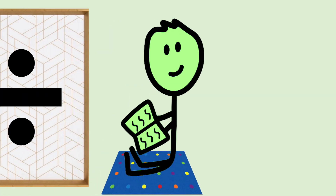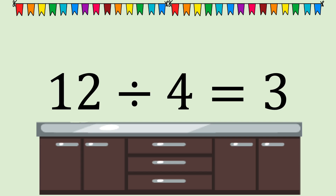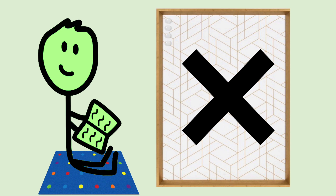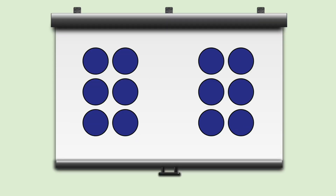And last, division has an identity property too. Let's go over what our numbers in a division number sentence are called. The number that is being divided is the dividend. The number that the dividend is being divided by is the divisor. And the answer is the quotient. Just like in multiplication, we are dealing with equal groups. In division, however, we are breaking a number into equal groups.